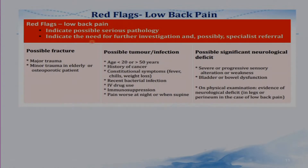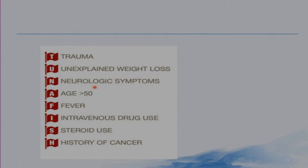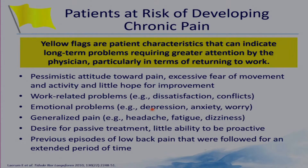Red flags indicate possible serious pathology and the need for further investigations. There are red flags indicating possible fracture, possible tumor or infection, and possible significant neurological deficit. There is an easier mnemonic: TUNA FISH. Yellow flags are patient characteristics that can indicate long-term problems requiring greater attention by the physician, particularly in terms of returning to work.